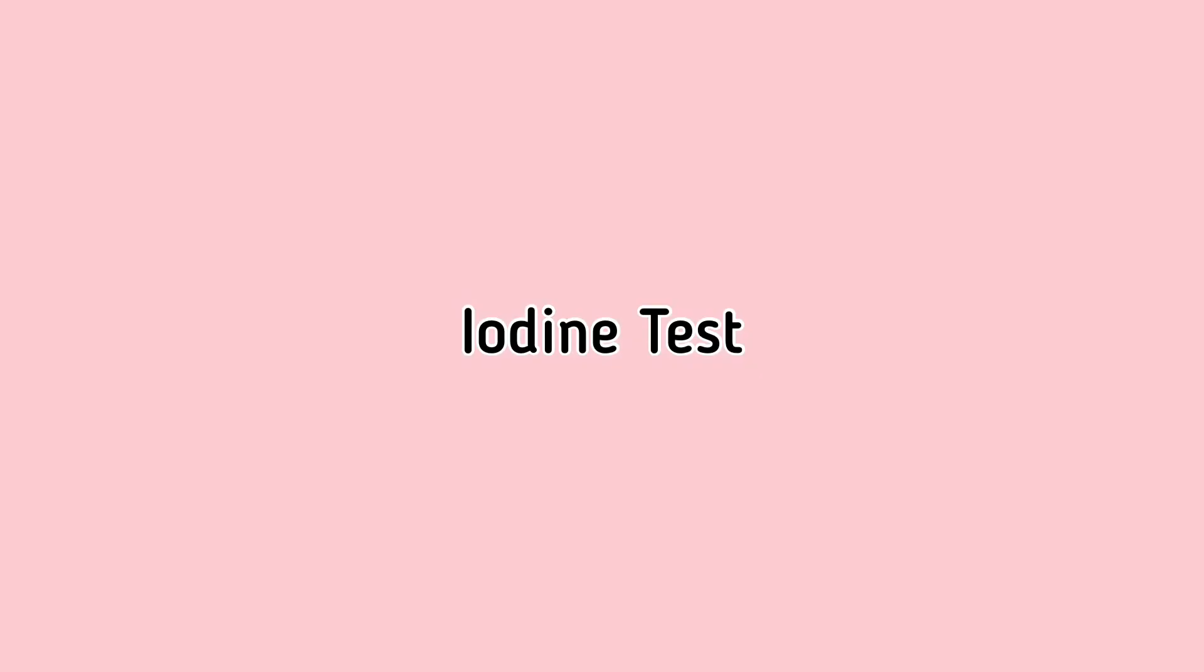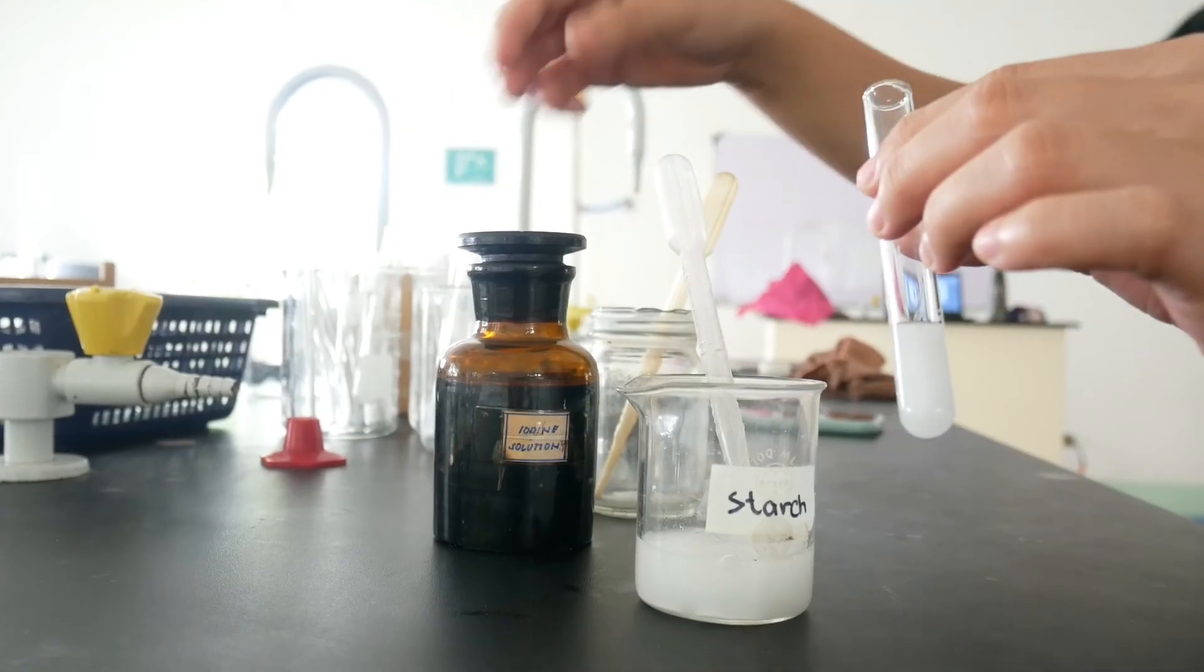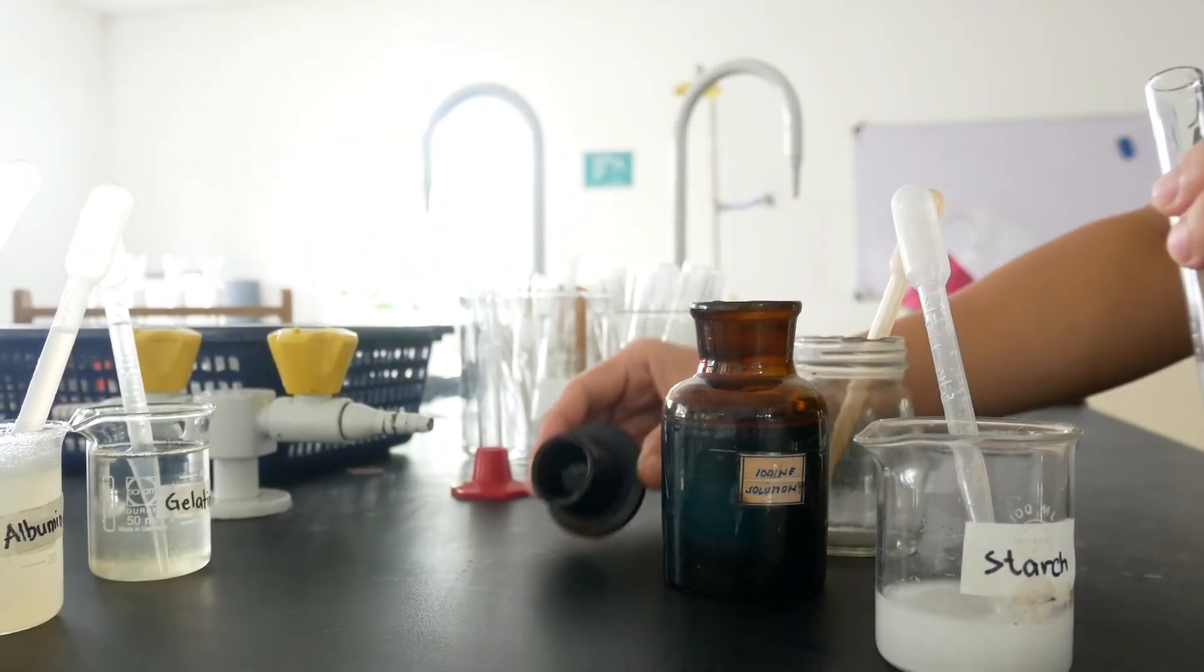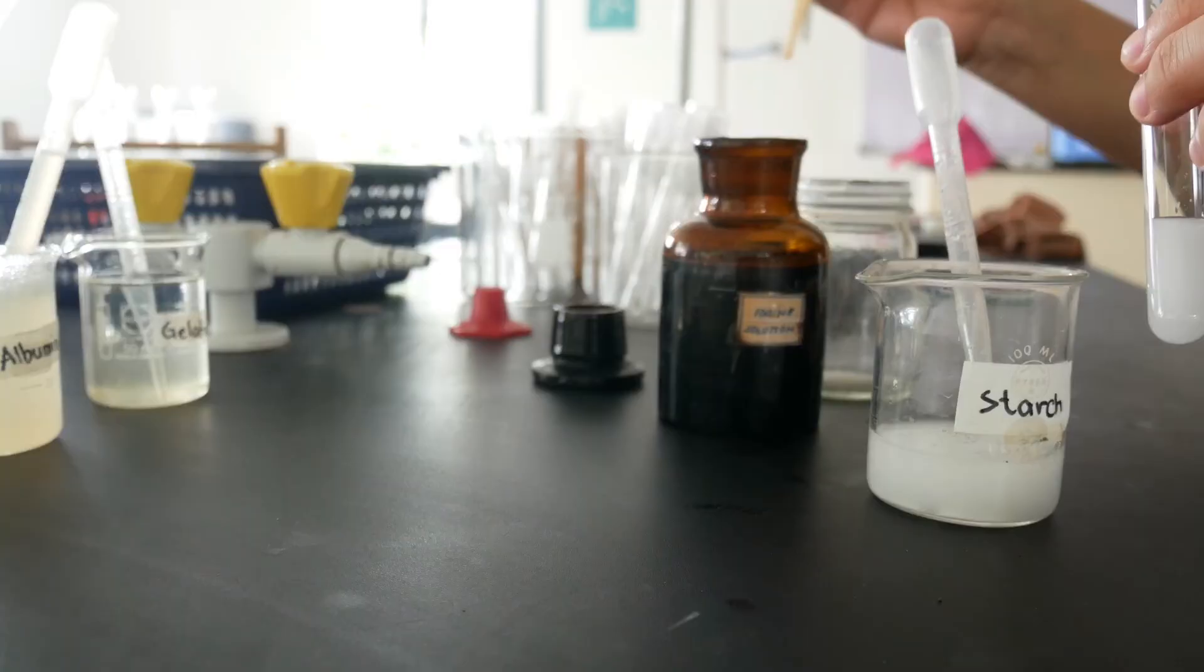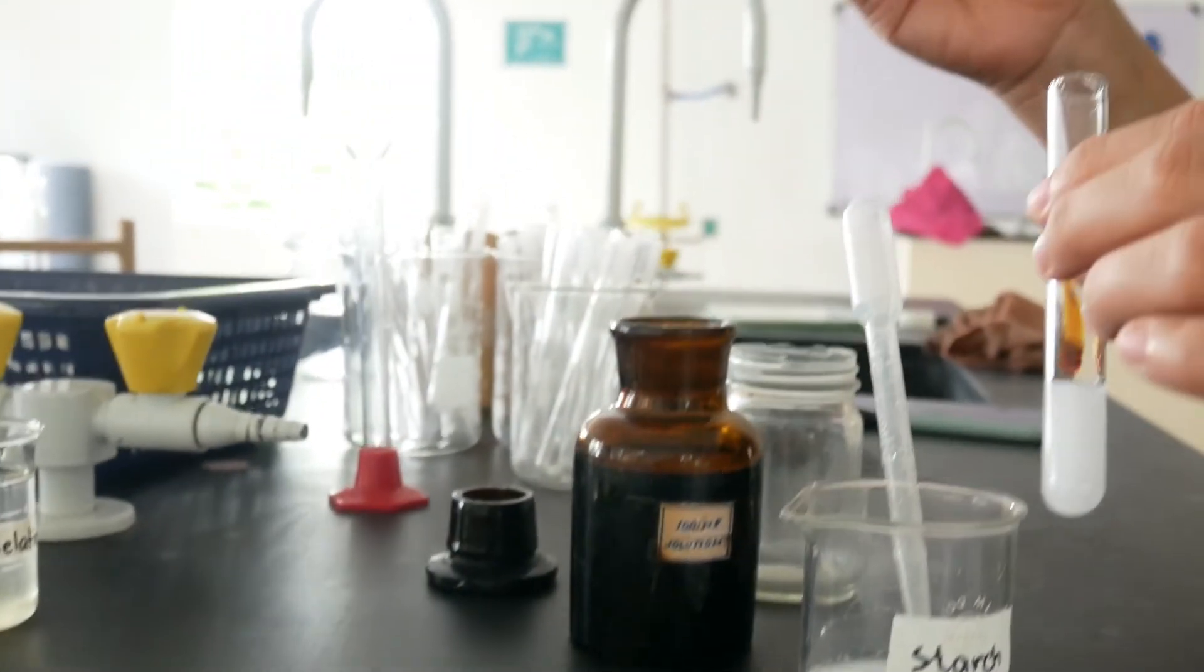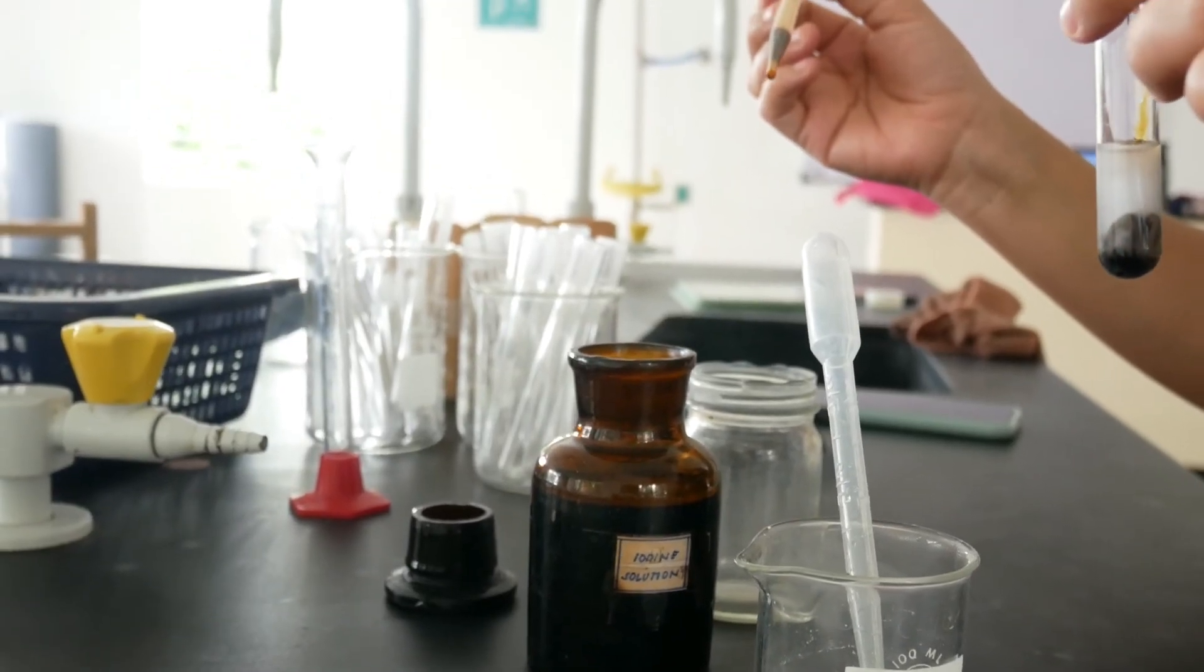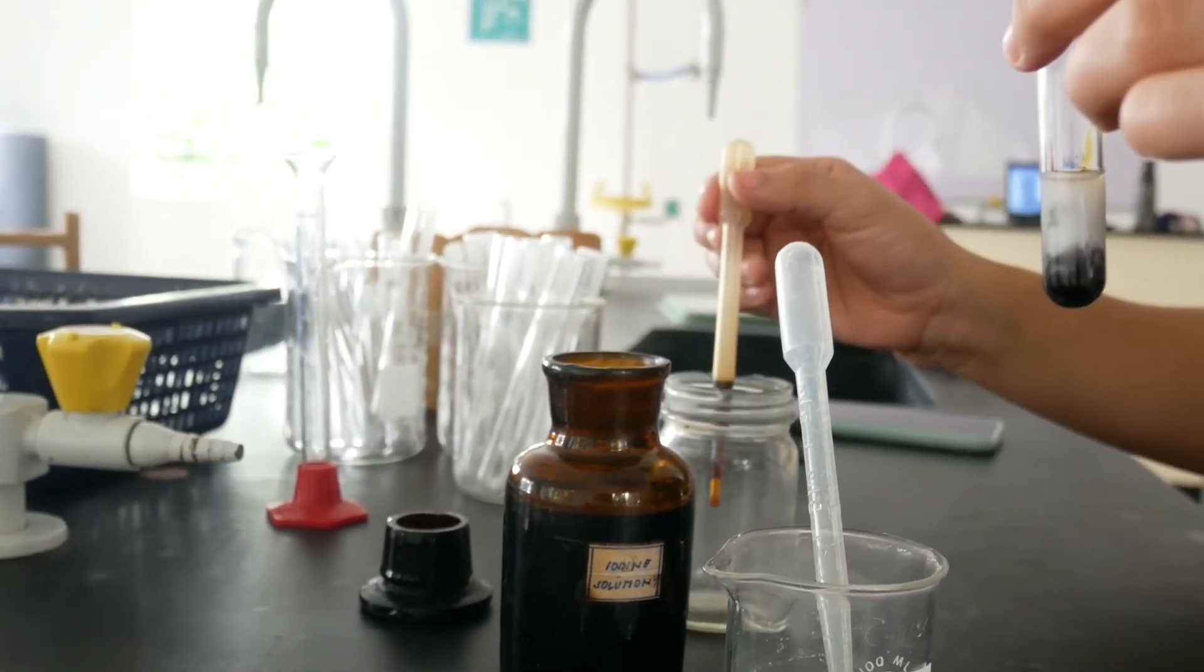And now we will be proceeding with iodine test for starch. For this test, we are going to place 2ml of the plant starch solution and then add a drop of iodine solution. And then heat the solution and note the change.